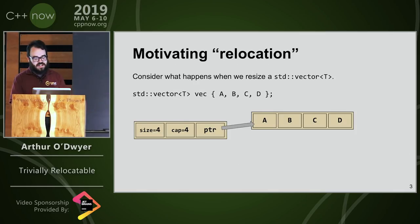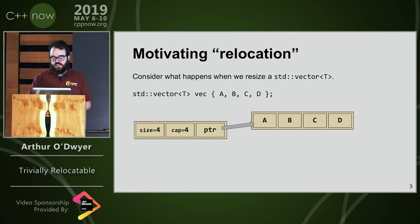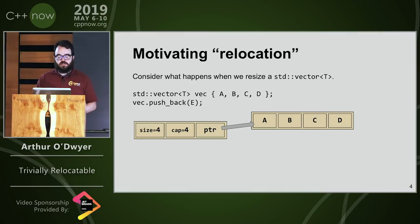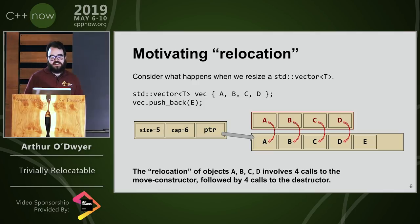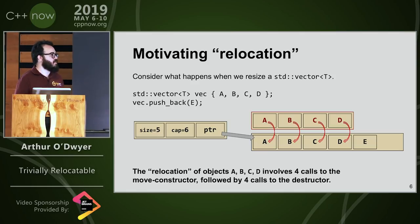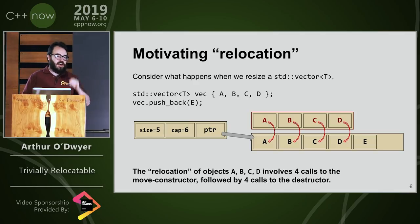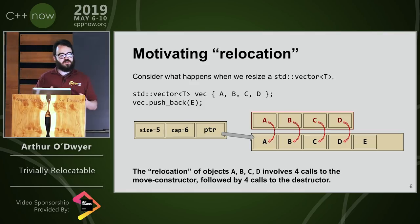Motivating relocation. Consider what happens when we resize or reserve in a std::vector and it's already at capacity. I have a vector of four elements. I try to add a fifth element. There's no more capacity, I need to reallocate the dynamic buffer. I go to my memory allocator, I get a bigger chunk of memory. I emplace 'e' into there, and then I need to get a, b, c, d from where they are down into the vector. Today the relocation of objects a, b, c, d from the old buffer to the new buffer is accomplished by four calls to the move constructor and then four calls to the destructor. You're still making eight function calls to move constructors and destructors.